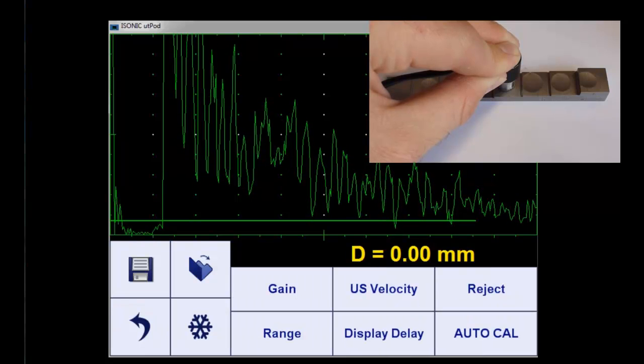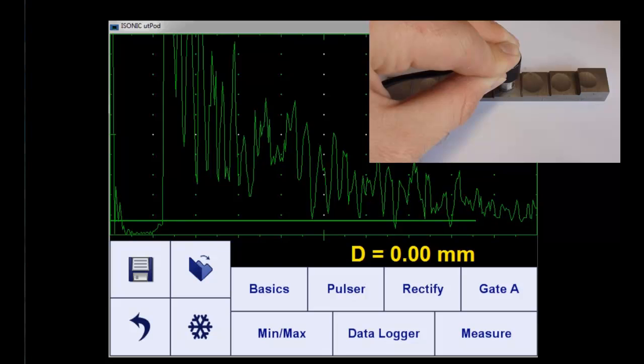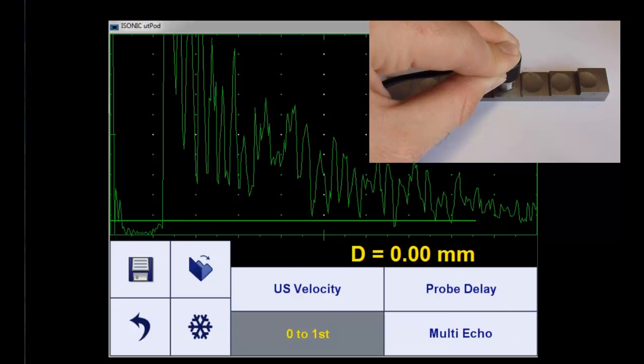Now we go back to the main menu. Here in this submenu you can choose zero to first or multi echo. Zero to first is what we're doing right now, what we want to illustrate and demonstrate here. We want to do measurements from zero to the first amplitude coming up.